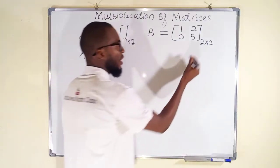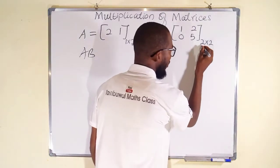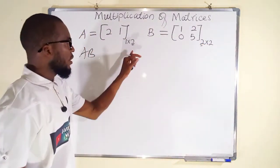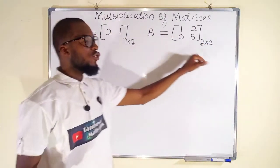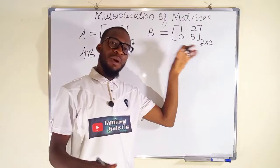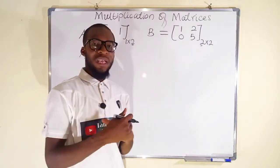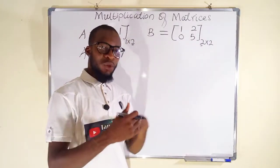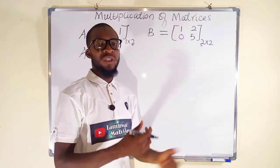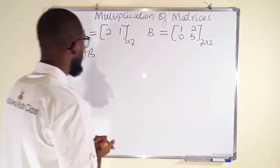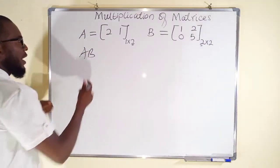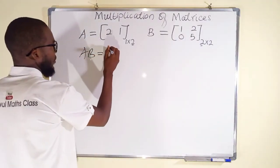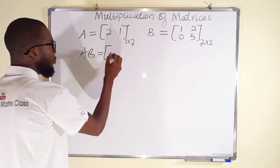You can see there are two columns in the first matrix and two rows in the second matrix — they are equal. The number of columns in the first matrix and rows in the second matrix must be exactly the same before you carry out this multiplication.